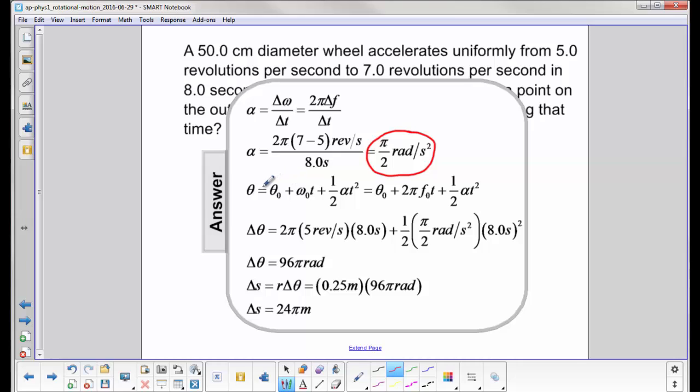We now find the displacement. We can start with theta 0 equal to 0 because it's not specified. However, we do have an initial angular velocity. We're moving at 5 revolutions per second. So once again, we make the substitution. Omega is 2 pi f. And then we have our equation here. Let me get rid of this guy again. And we come up with an angular displacement of 96 pi radians.